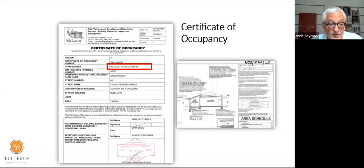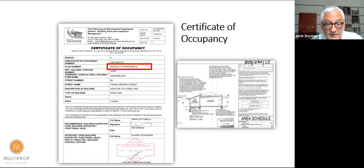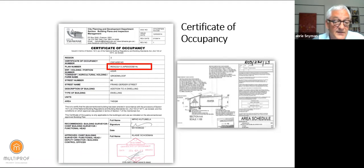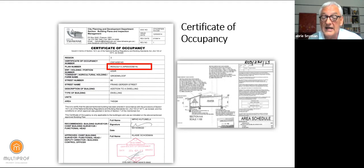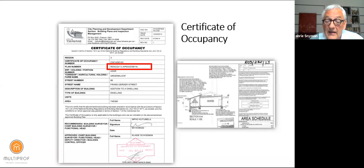We often find that someone submits a building plan for an addition — say a two by three meter kitchen — and when the builder is on site they decide to add something else, make changes, or use cheaper materials than prescribed. For example, a carport built with less steel. Even though you might have an approved building plan, you will not get a certificate if the structure doesn't comply.